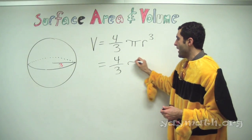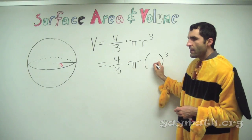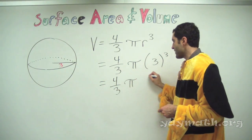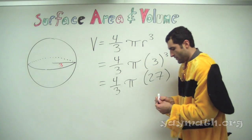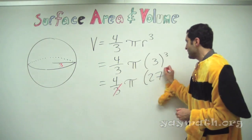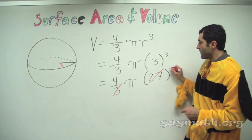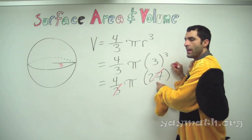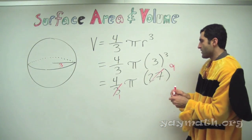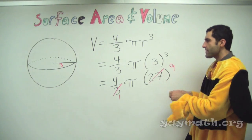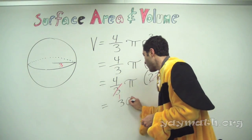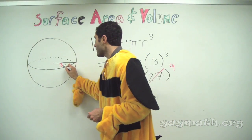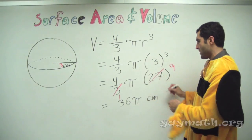Volume equals four-thirds pi r cubed. What goes in for r? Three. What is three cubed? Twenty-seven. We have cancellation — four-thirds times twenty-seven — that becomes thirty-six. So the volume is 36 pi. Interesting — the surface area was also 36 pi. That is a coincidence; they happen to be the same for r equals three.